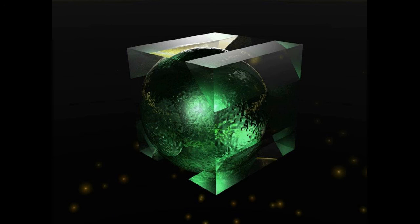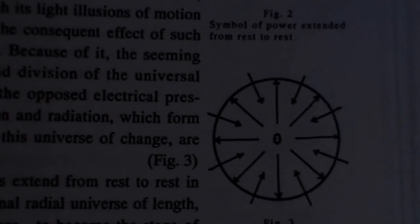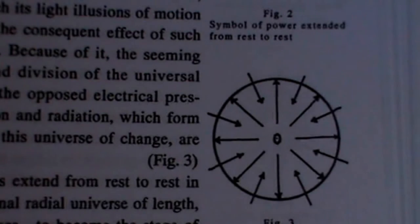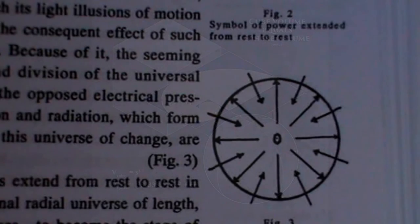The cube and the circle are constantly interchanging with each other in order to birth form matter in motion. A sphere is pulling itself inward to actually create a cube, and a cube is always bulging out its sides, expressing itself outward in order to become a sphere. God's imaginings extend from rest to rest in his three-dimensional radial universe of length, breadth, and thickness — to become the stage of space for his imagined radial universe of matter, time, change, and motion.